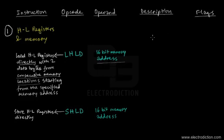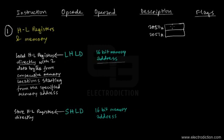Let's give an example. Say we have two memory locations: 2050H and 2051H. At each of these memory locations we have corresponding data bytes — at 2050H we have the data byte 2FH, and at 2051H we have the data byte 32H. These are the data bytes in the corresponding memory locations 2050H and 2051H respectively.